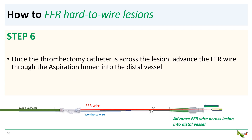Step six: once you've advanced the thrombectomy catheter well across the lesion and into the distal part of the vessel, you then advance your FFR wire through the aspiration lumen all the way to the end of the thrombectomy catheter, which is now sitting in the distal part of the vessel.